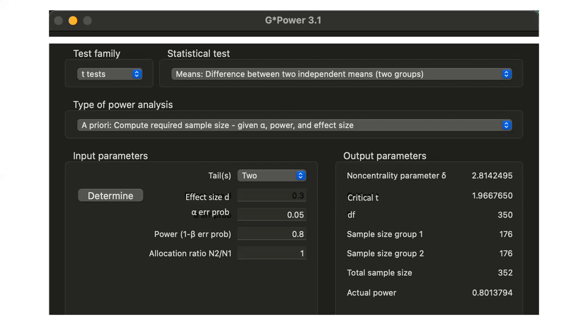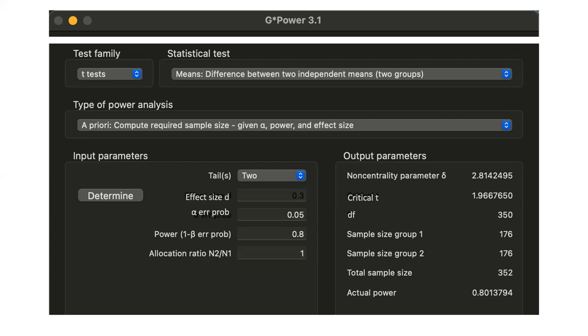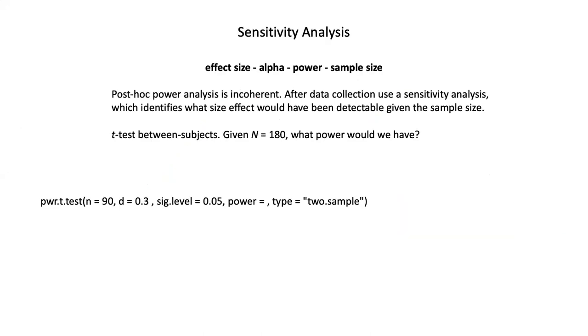This is what that same screen would look like in G*Power. You select a test family in the upper left - t tests - then which statistical test: means difference between independent means. Type of power analysis is a priori. Then you put in the features and it tells you the answer. Reassuringly, we get the exact same answer in G*Power that we got out of R. This is what the power diagram looks like for the effect I just mentioned, 0.3. You can see the relative likelihood of false positive and false negative here. But is 0.3 realistic for your study, given your literature? For some of you, it will be an overestimate, which means you would need even more people to have that same level of power.